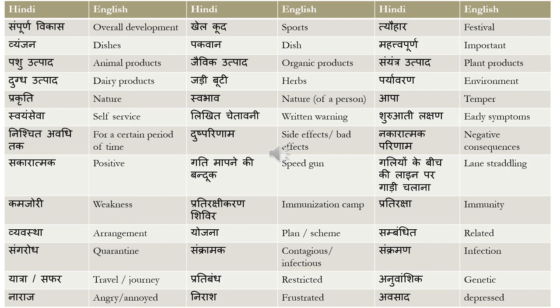'Gati maapne ki bandook' means speed gun — this came up in a particular dialogue. 'Galiyon ke beech ki line par gaadi chalana' means straddling of lanes. 'Kamzori' means weakness. 'Pratirakshakarana shivir' means immunization camp — 'pratiraksha' is immunity.